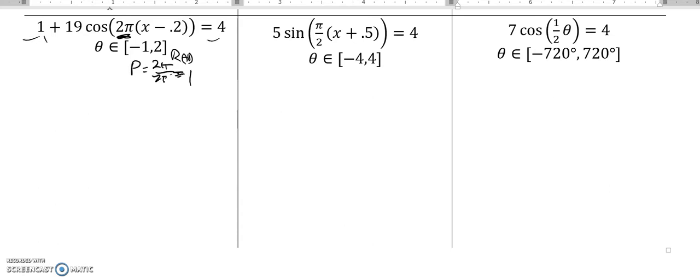Let me solve it. Subtract 1 from both sides. 19 times cosine of 2π times x minus 0.2 equals 3. Divide by 19. Cosine of 2π times x minus 0.2 equals 3/19. I divided both sides by 19.